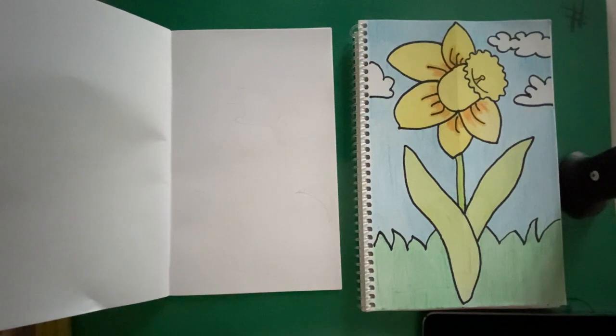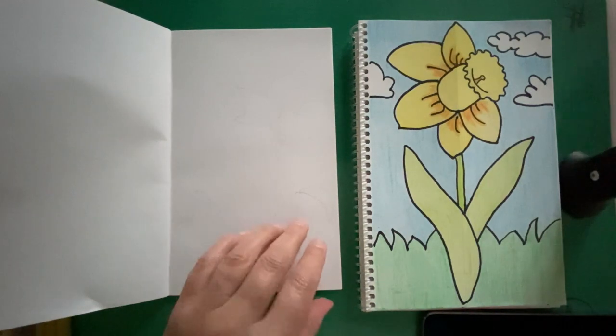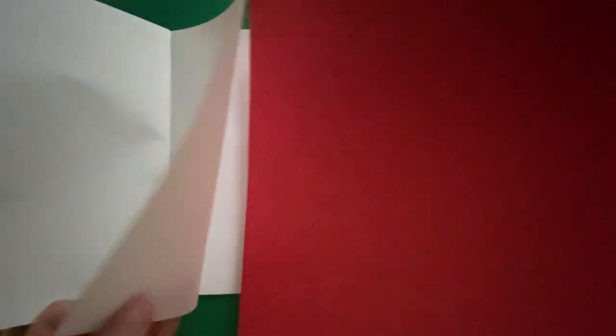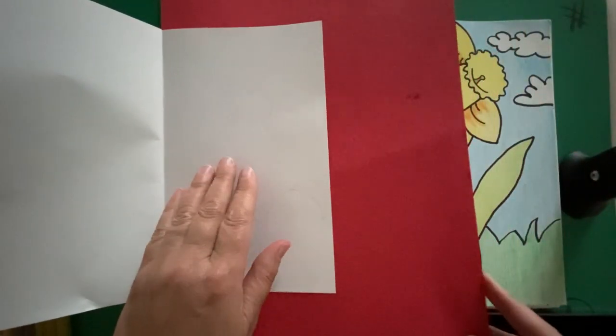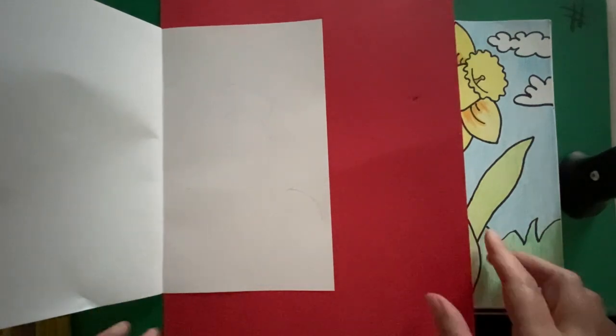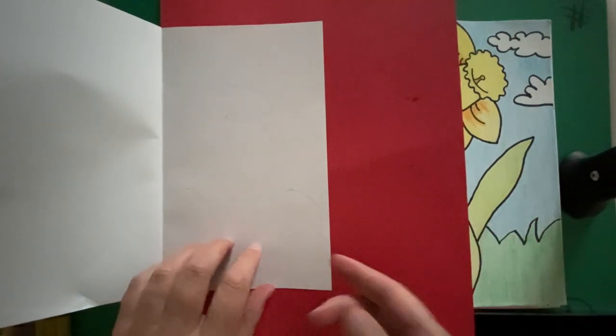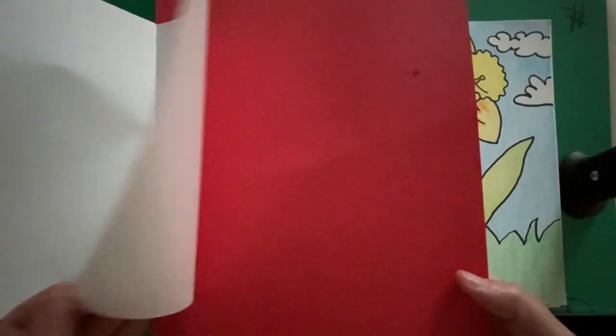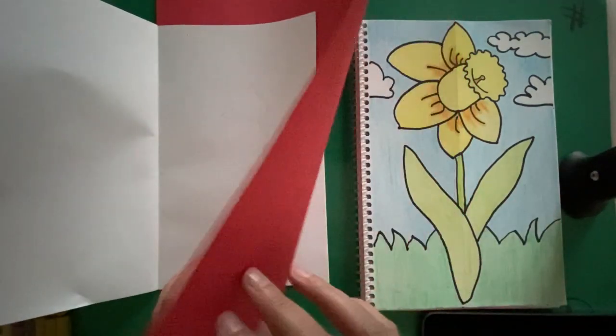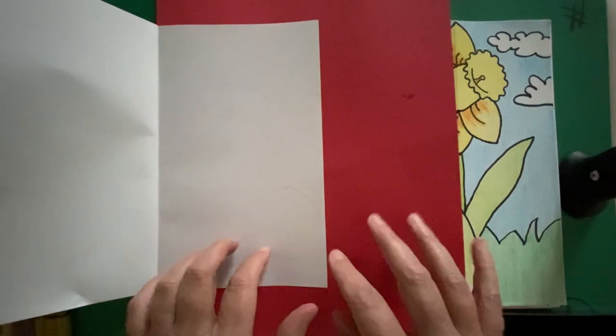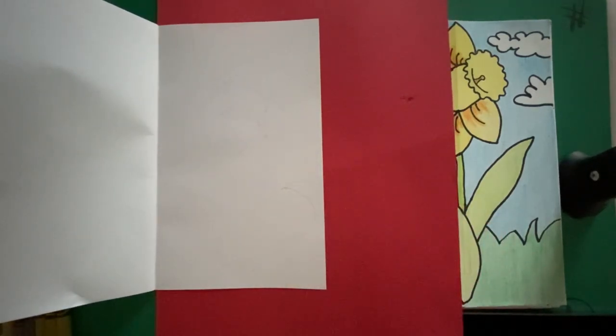All right, boys and girls, here we go. Before we start, I always want to put a sheet of paper behind. It could be just a scrap paper or maybe have a piece of construction paper like I have here. And I always want to put it behind the page that I'm drawing on just so that nothing goes through to my next page in my sketchbook. Okay, so we're going to go ahead and get started. Are you ready?